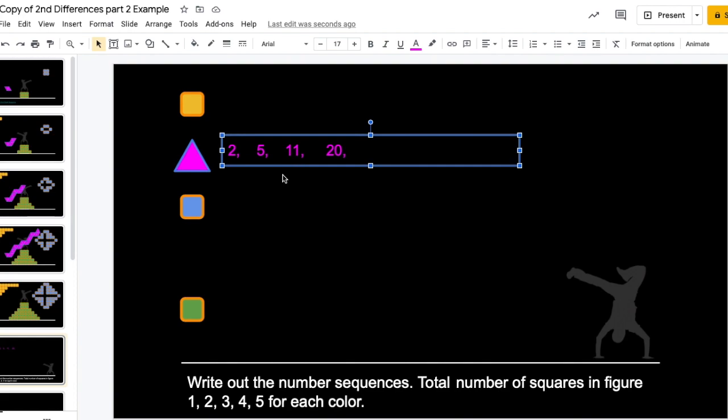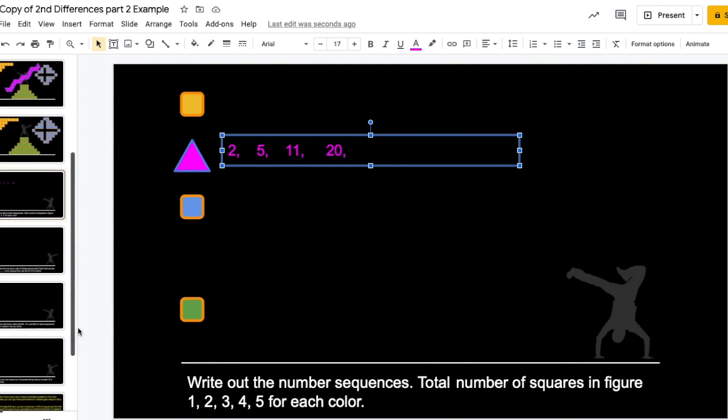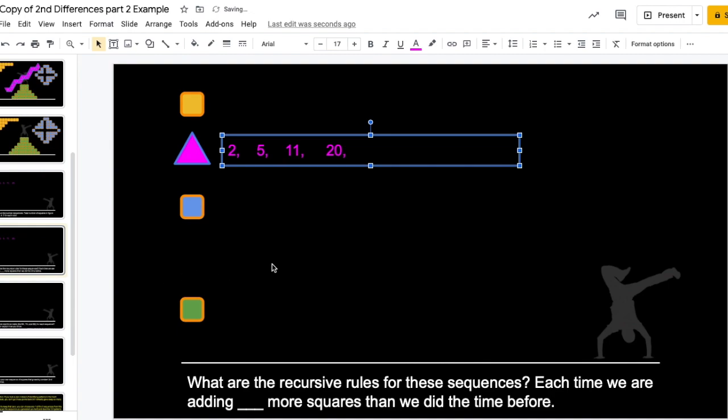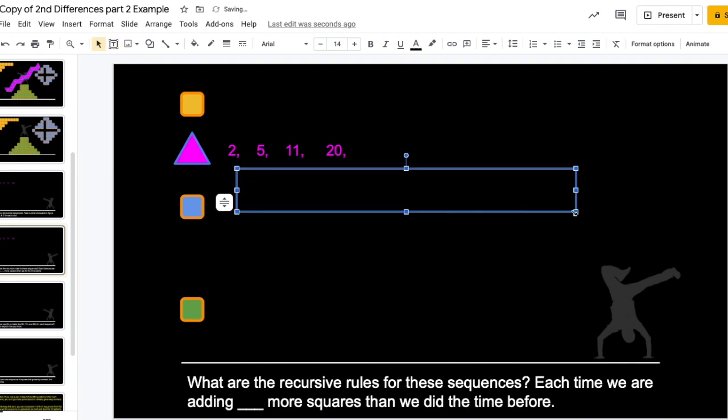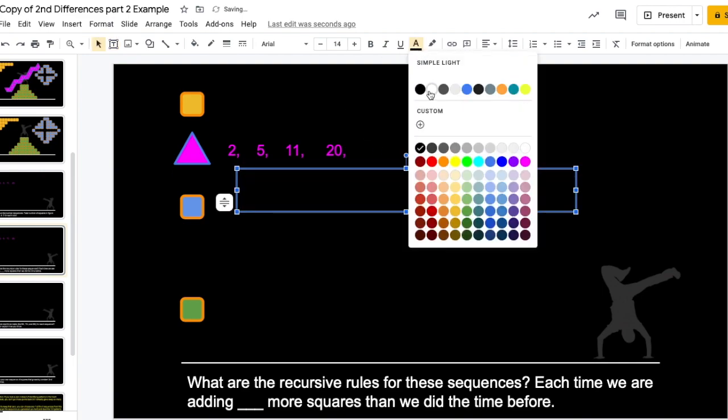Now I'm going to copy my answers from slide 6 onto slide 7 and answer the next question. Next question says, what are the recursive rules? Meaning, how do I get from one term to the next for my pink pattern? So, what am I doing?